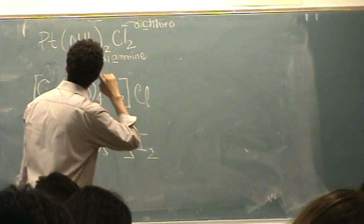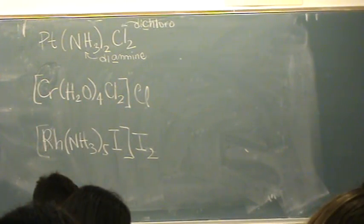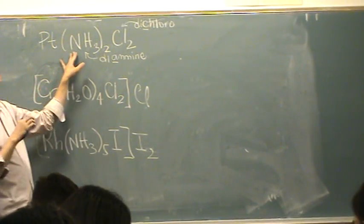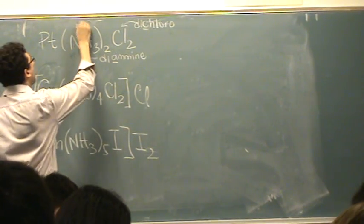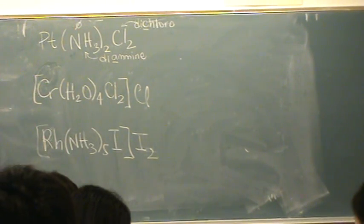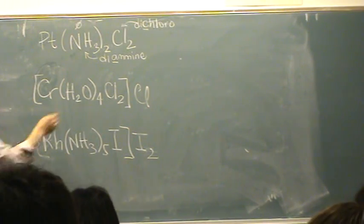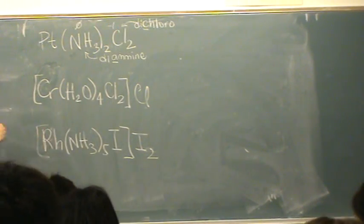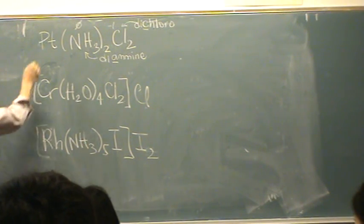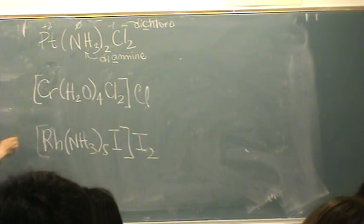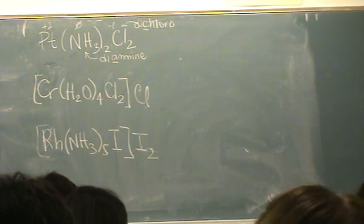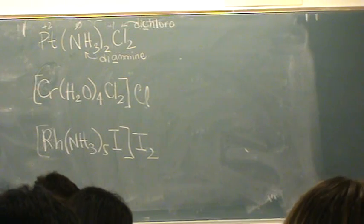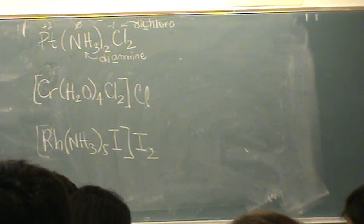So now what I want to do is find the charge on platinum. I told you, and you should know, that ammonia has a zero charge. What's the charge on chlorine? Minus one. And there's two of them, so it would be minus two. So platinum must be plus two. So once you have all the ligands, you know them in alphabetical order, and you know the charge on platinum, you're ready to go.